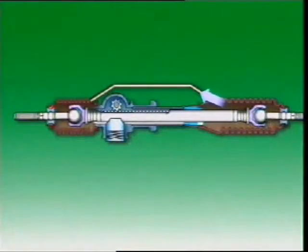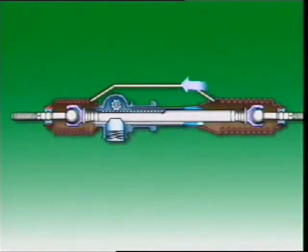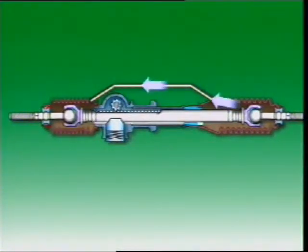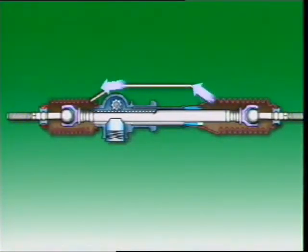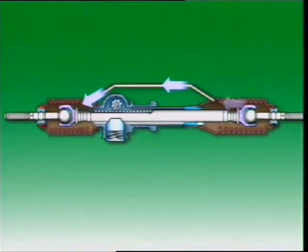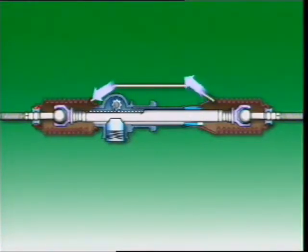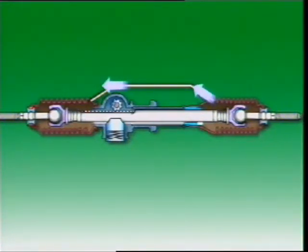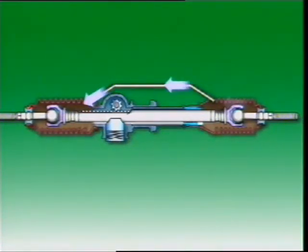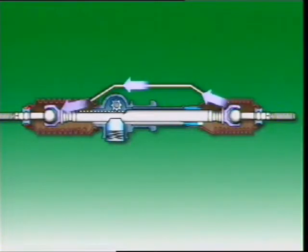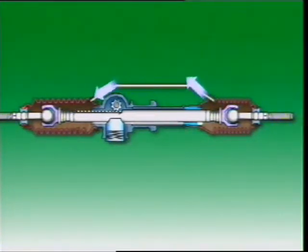On some vehicles, both bellows are interconnected by a tube so that as the steering wheel is moved from side to side, air is transferred from the collapsing bellow side to the expanding bellow side.